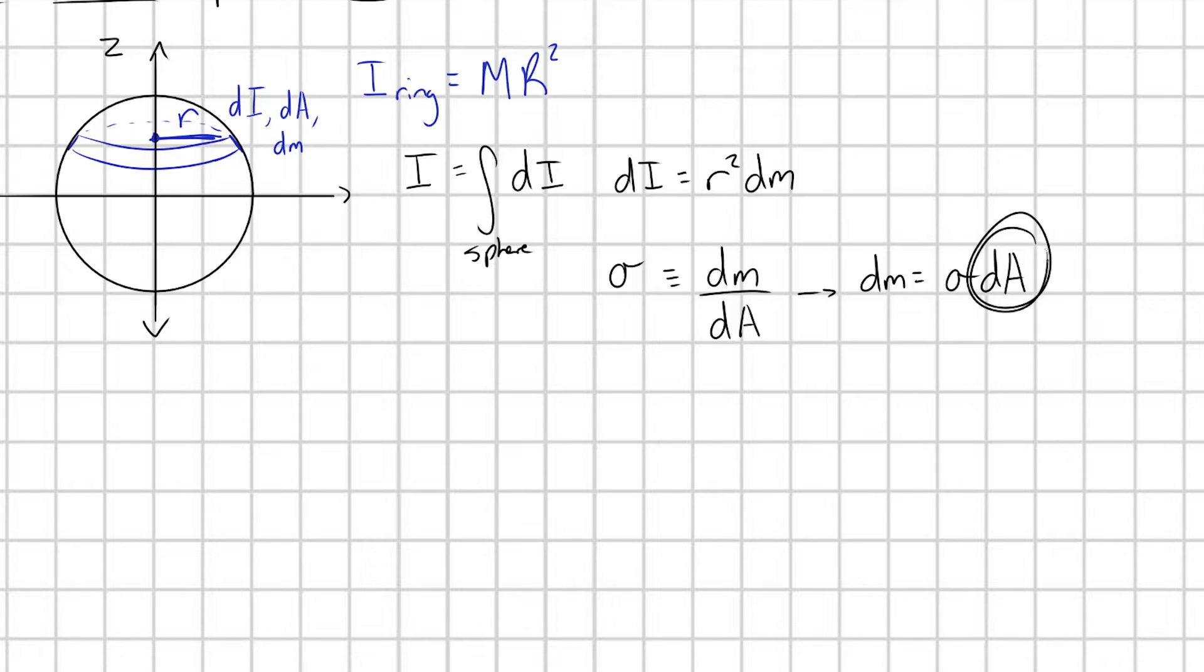We'll think about the nature of our area elements here in a second. For right now, let's worry about sigma. Because I have a uniform spherical shell, I can find the mass density simply by taking the total mass m of my shell divided by its area. What's the area of a spherical shell? 4 pi times its radius squared.